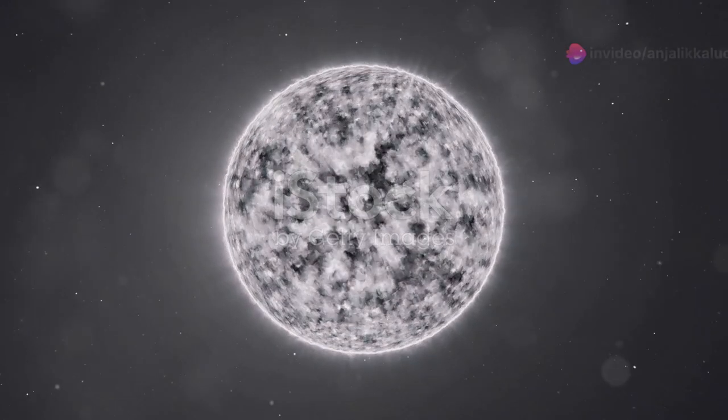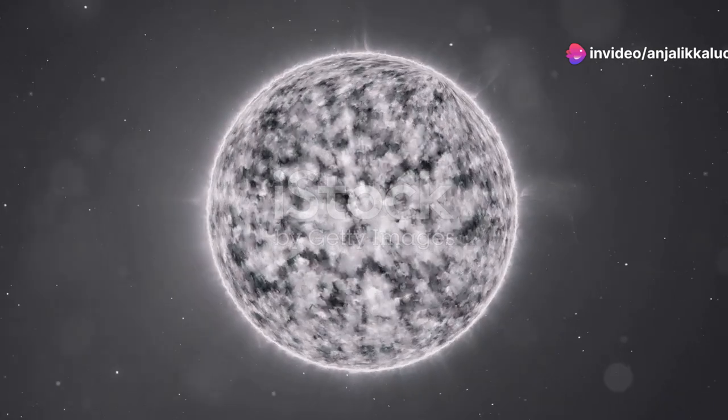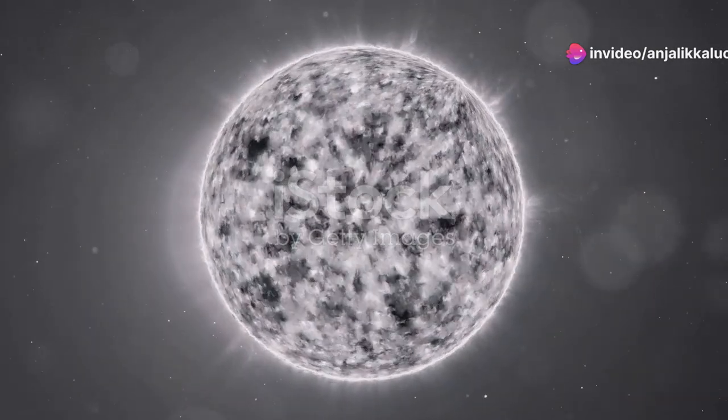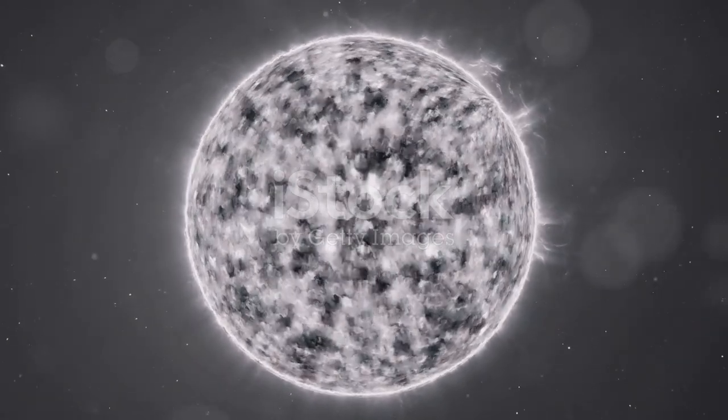This radiation then slowly makes its way to the star's surface, where it is emitted into space, providing the light and heat that we observe from Earth. The journey from the core to the surface can take thousands of years.